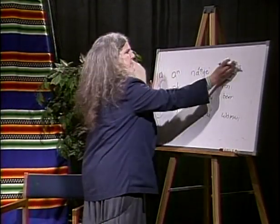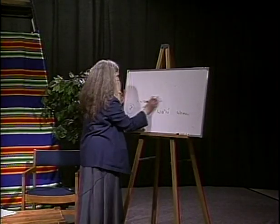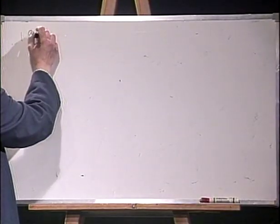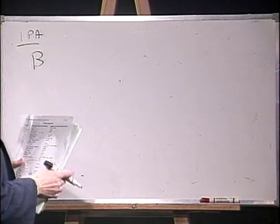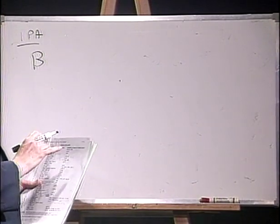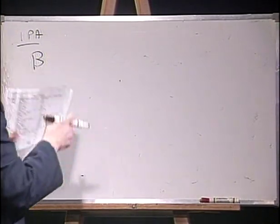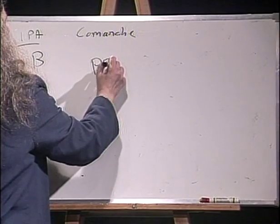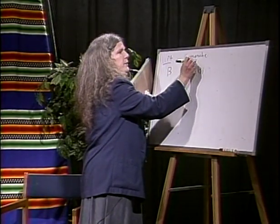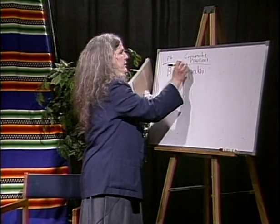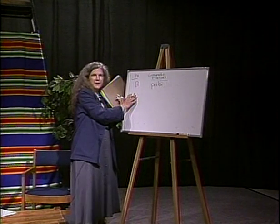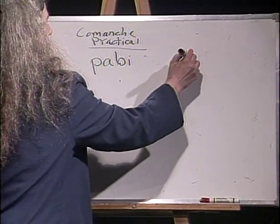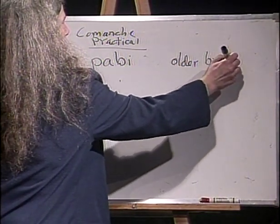Let me give you a couple of examples from Comanche. Comanche has a sound, a sort of B-like sound, sort of a cross between a B and a V. The IPA symbol is a Greek letter beta. It's not really a B, it's not really a V, it's more of a V. For instance, in the Comanche word for older brother, you say 'pabi'. In the practical orthography, we write it with just the regular letter B, because there aren't two or three types of B in Comanche — there are several types of B in the languages of the world, but only one type in Comanche. So a regular B will do.